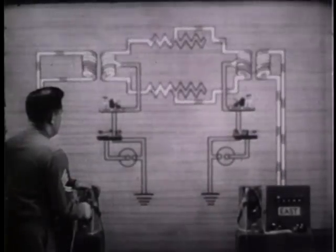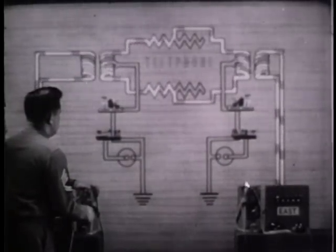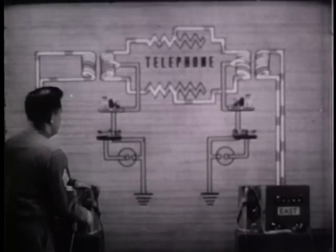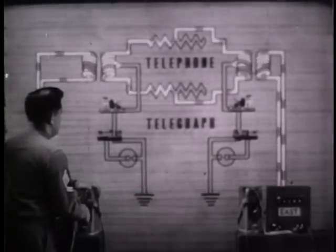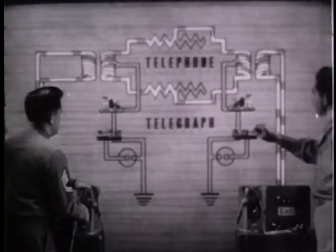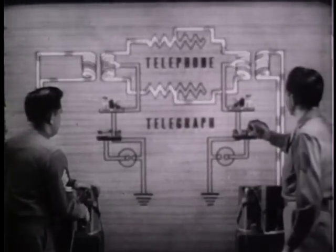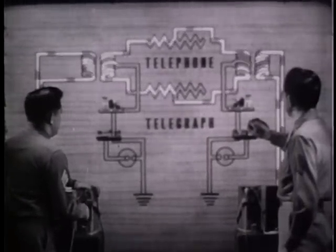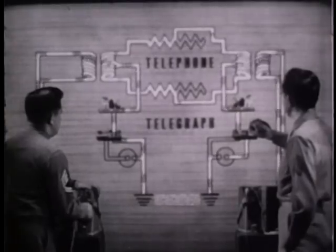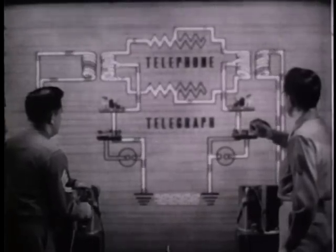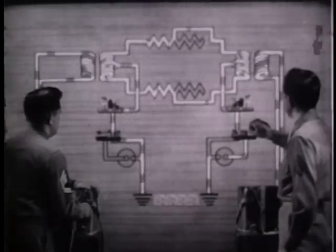Under ideal conditions, the currents in a telephone circuit, simplexed for telegraph, look like this. Since both sides of the line are alike, this circuit is balanced.